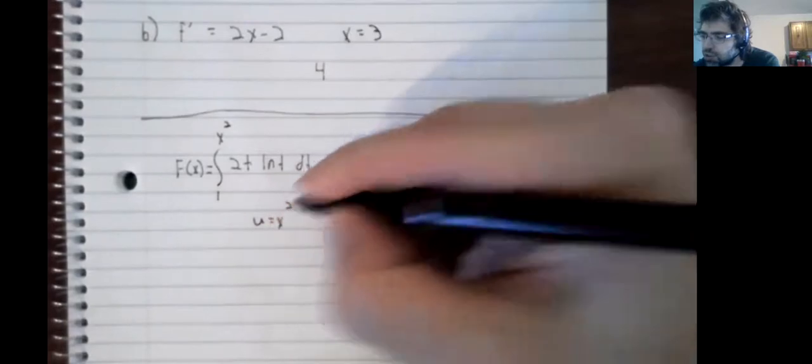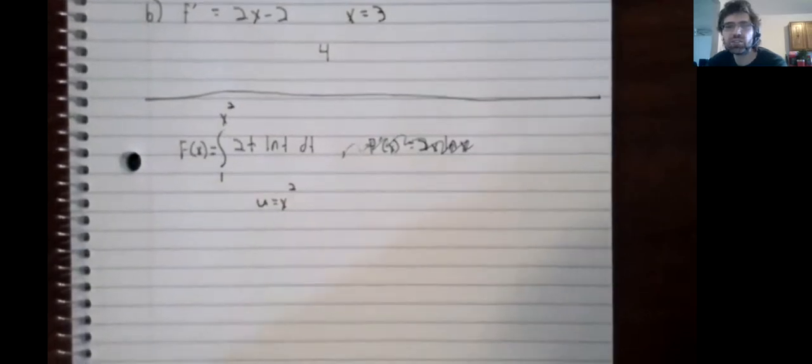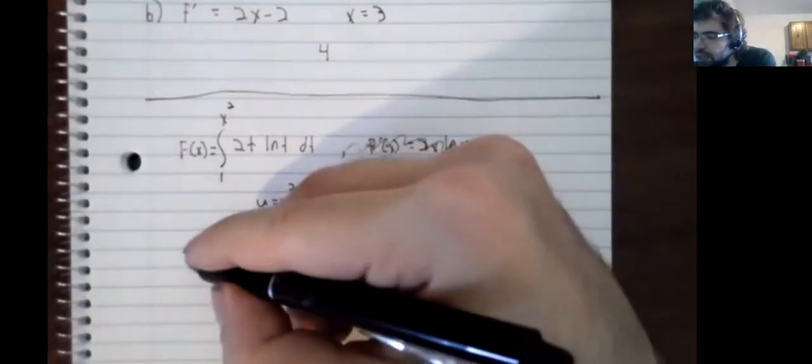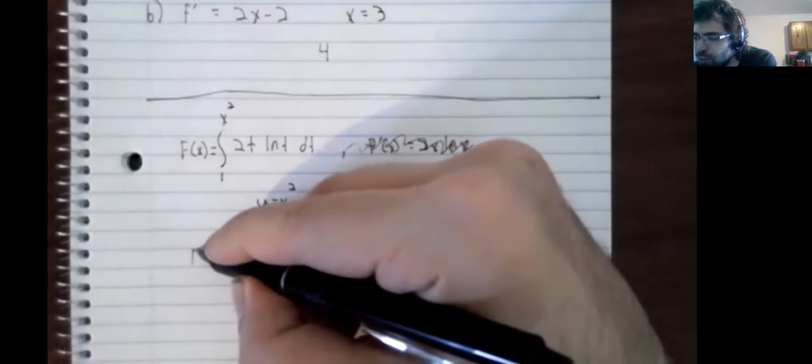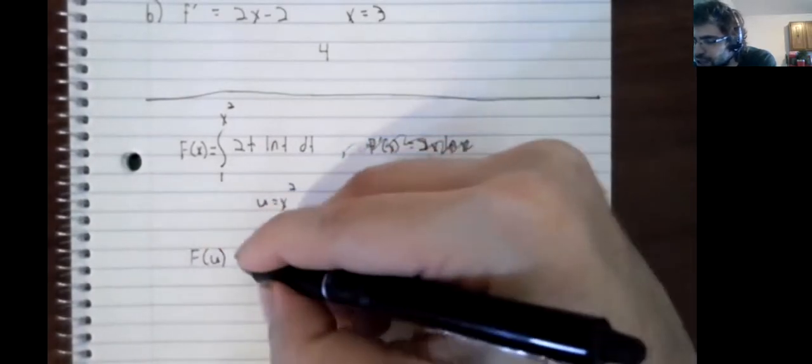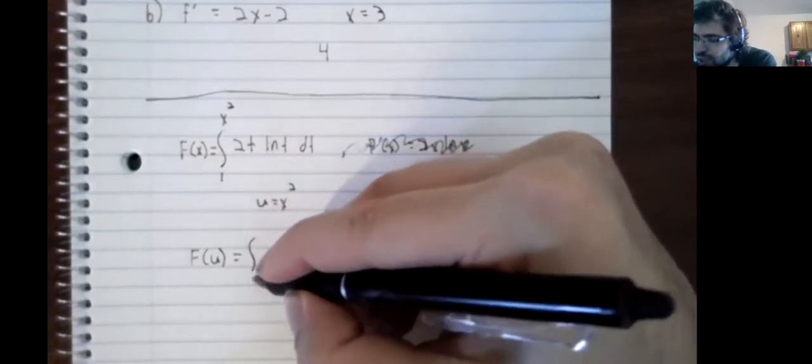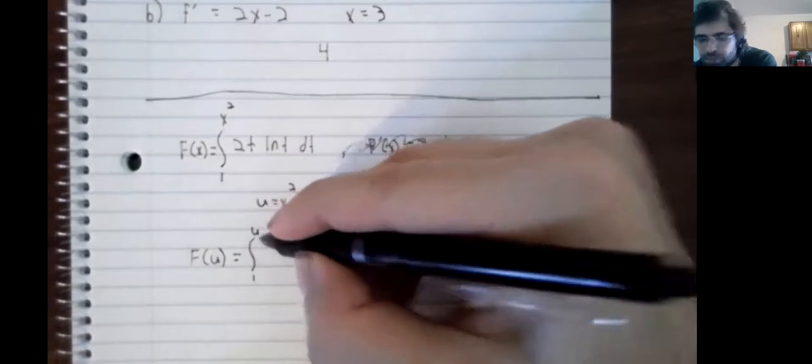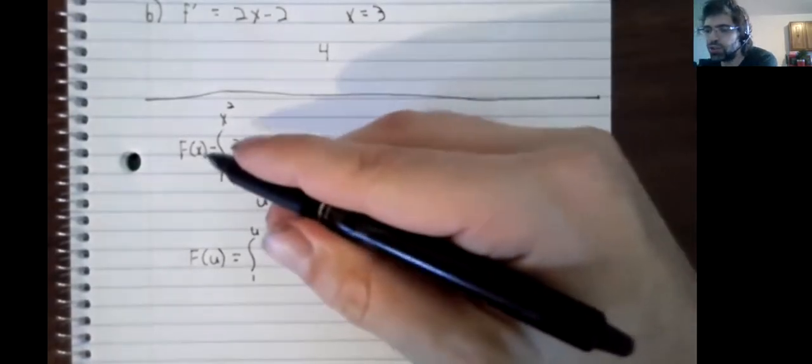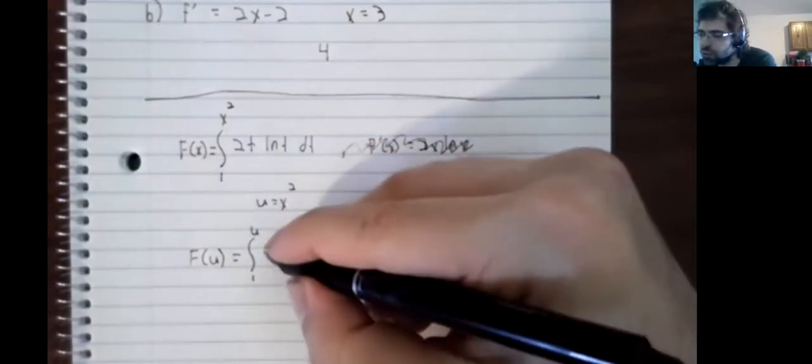If we just had this, the derivative would come immediately from the first part of the fundamental theorem. We add a hitch by having an x squared there. And the solution is that u would be x squared. This is not u-substitution, even though I know it kind of looks like it.